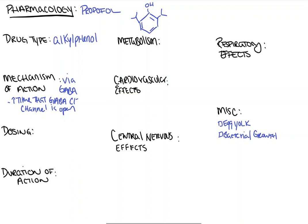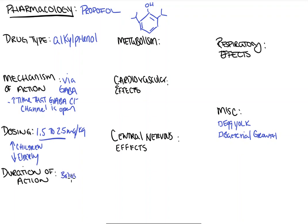Now is also a good time to mention the dosing and duration of action. Typically in normal adults, patients are dosed at 1.5 to 2.5 milligrams per kilogram for your induction dose. This goes up in children — almost all the way up to 4 or 5 — and it goes down in the elderly. The sweet spot is 1.5 to 2.5 mg/kg. The duration of action from a single bolus is usually about 5 to 8 minutes.